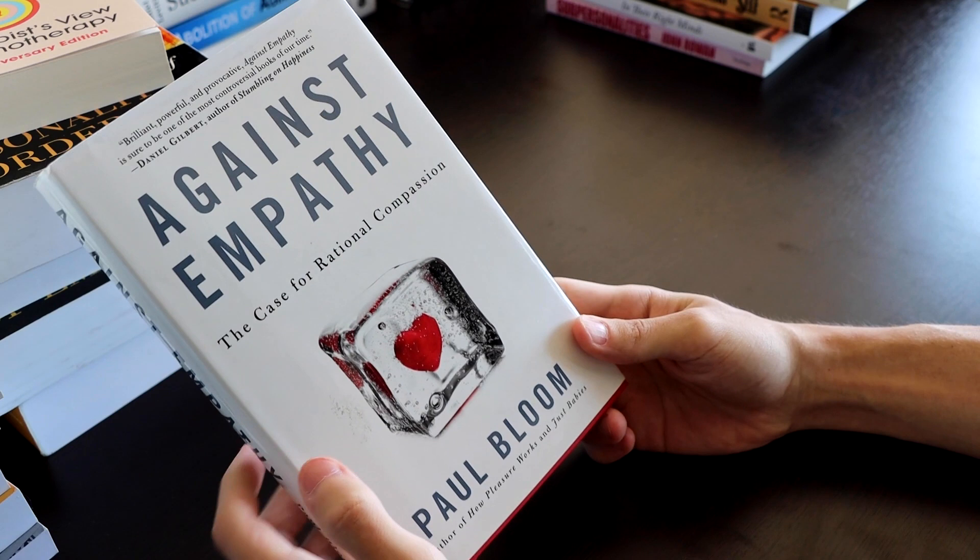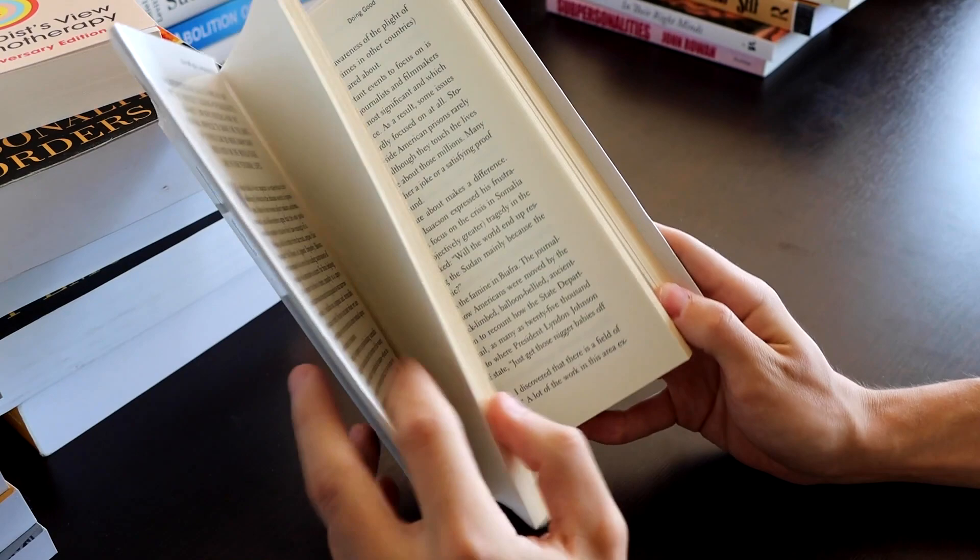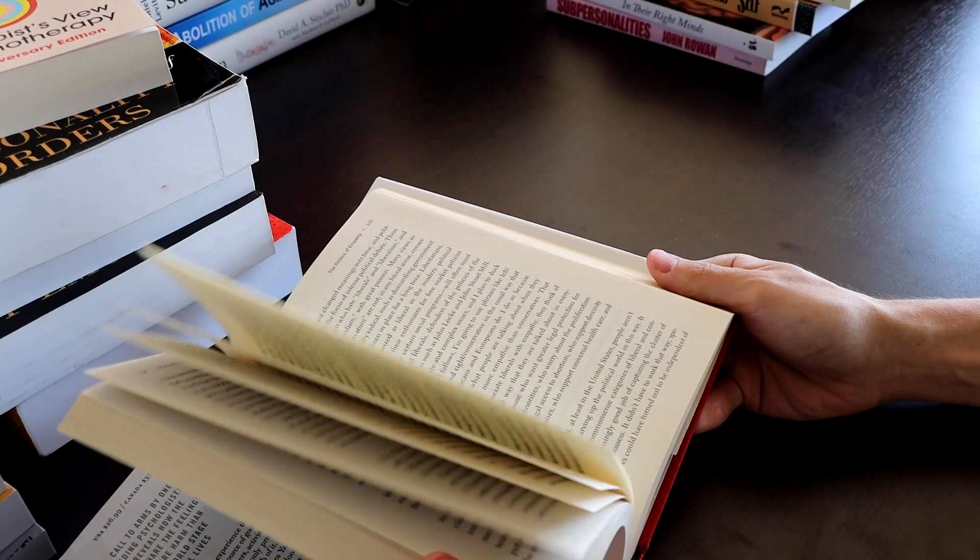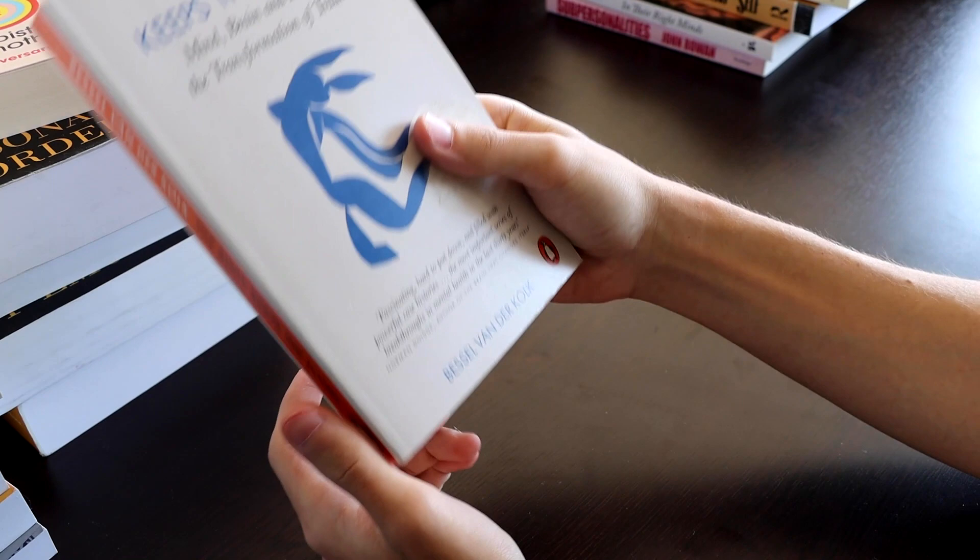Against Empathy. This is basically a book about how empathy can lead us to biased thinking or irrational thinking. And he basically argues in this book that rational compassion, as he calls it, or just being compassionate by using reason as opposed to being empathetic by being empathetic. He argues that in here. I think there's some truth to that, but you'll have to read the book yourself and see how you feel about it. I liked the book. It was a good book.